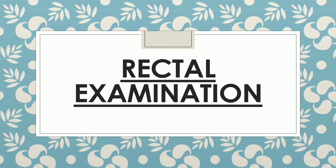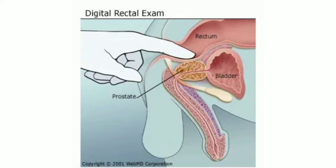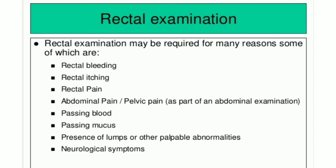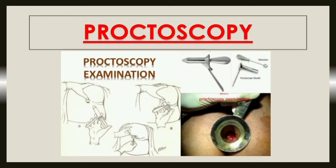Rectal examination is extremely important. The internal opening must be felt by digital examination. We have to locate the fistula and determine whether it is above the anorectal ring or below. If it is a high fistula, the treatment option will be different from a low fistula. Even if there are multiple external openings, there must be one internal opening which we need to identify on examination. Proctoscopy is sometimes necessary to visualize the internal opening of the fistula.